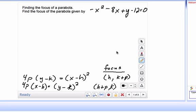And then you're going to calculate p, and you either add it to the y coordinate or the x coordinate, depending on which direction your parabola is opening, up or down, or right or left.